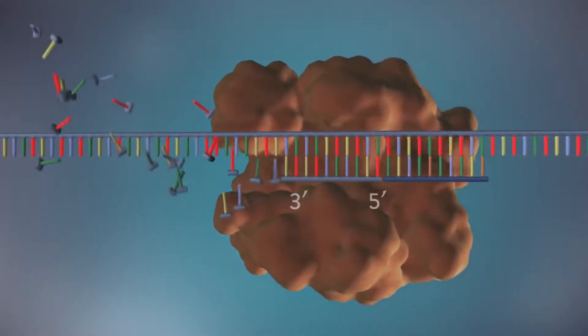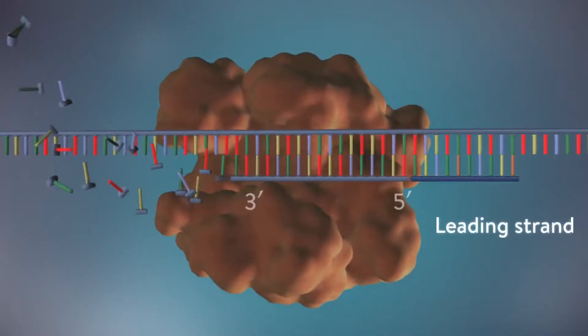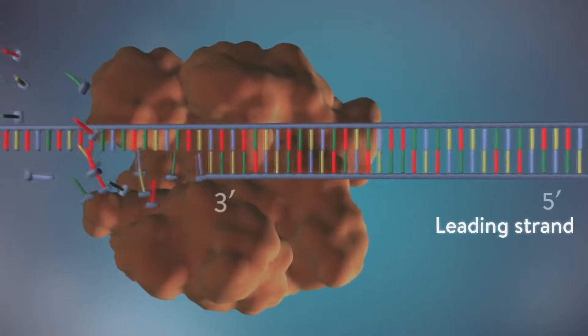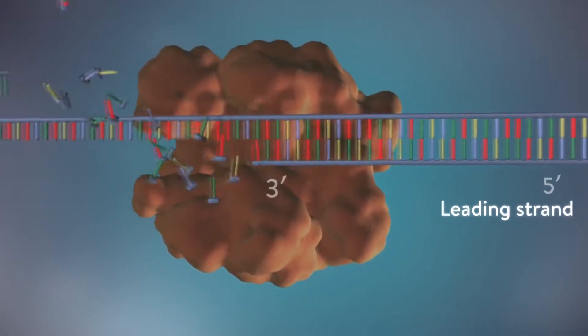One of the new strands of DNA, the leading strand, is made continuously, the DNA polymerase adding bases one by one in the five prime to three prime direction.